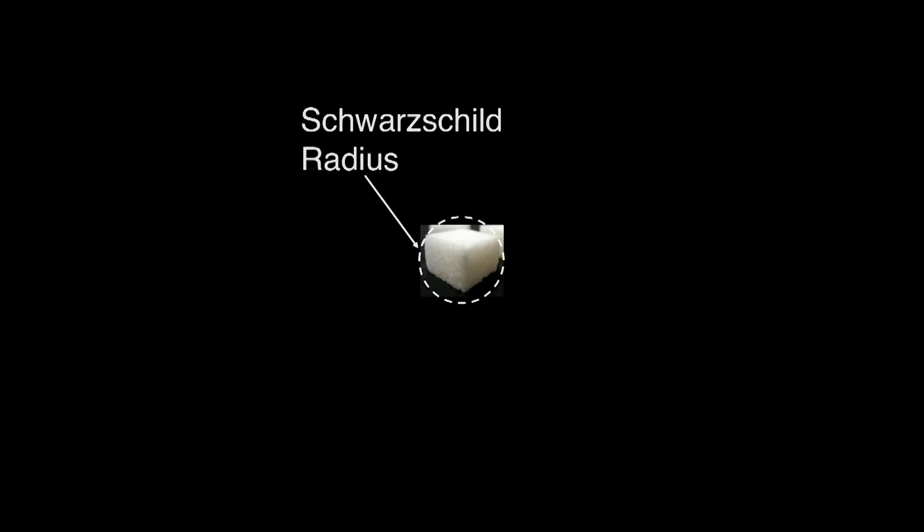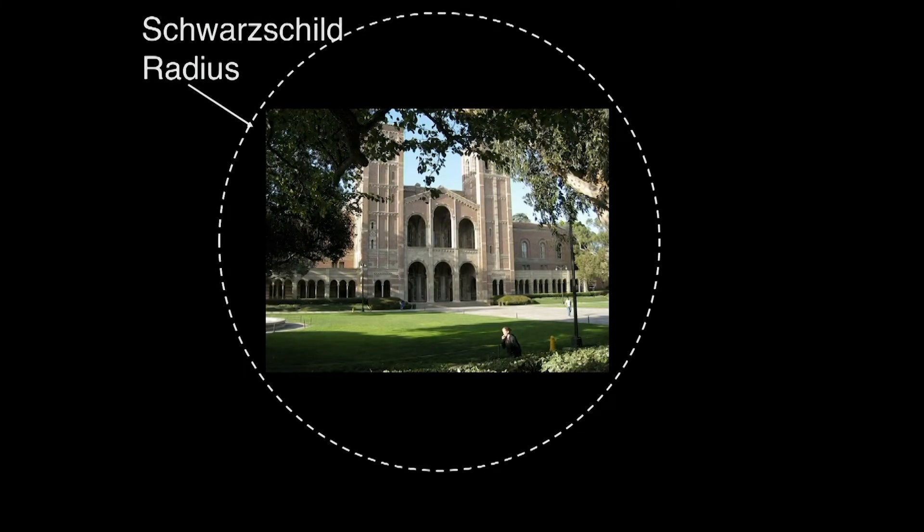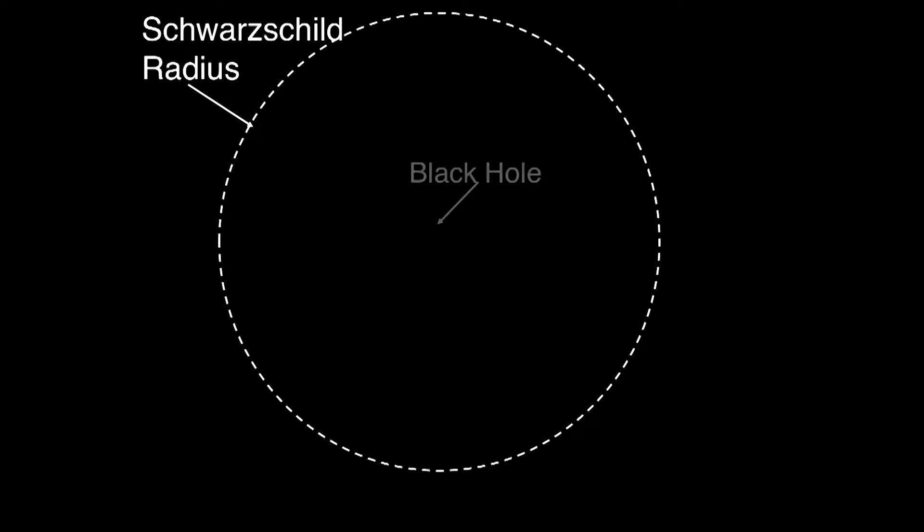The more massive the object, the larger the Schwarzschild radius. For example, if we were to take the Earth and squeeze it down to the size of a sugar cube, it would be forced to become a black hole. If we scale up and consider the sun, squeezing it down to roughly the size of a college campus, it would become a black hole. So now we know what a black hole is and how to prove these things exist — let's talk about where black holes appear.